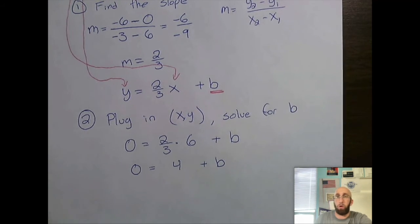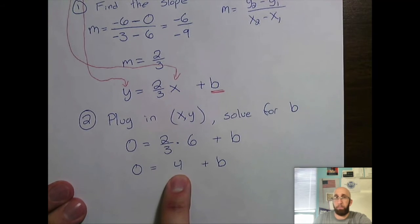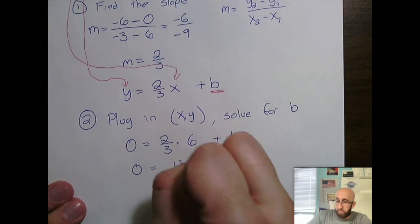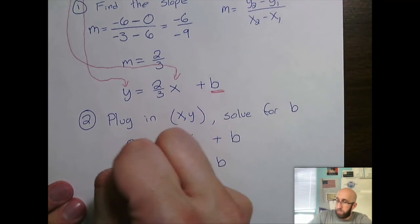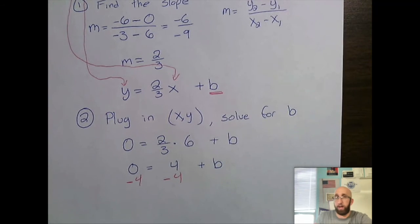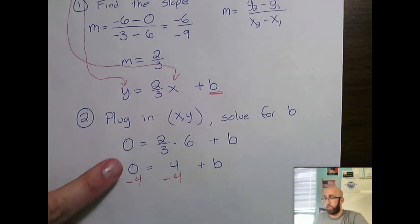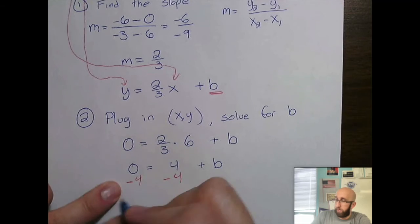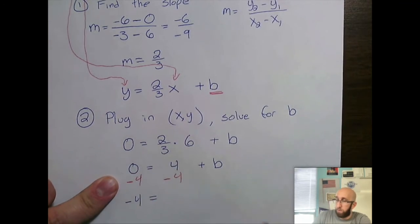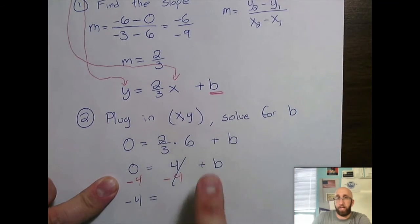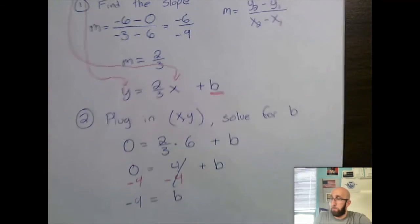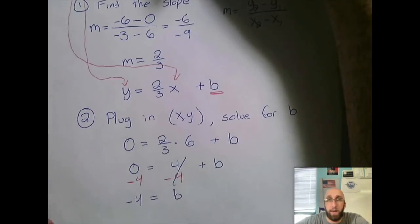My goal is to get b all alone. So let's do that. I need to move this 4 away from the b. The opposite of a positive 4 is subtract 4 here, subtract 4 there. Subtract 4 from both sides. 0 minus 4 is negative 4. These 4s cancel and I got myself b. We found b.